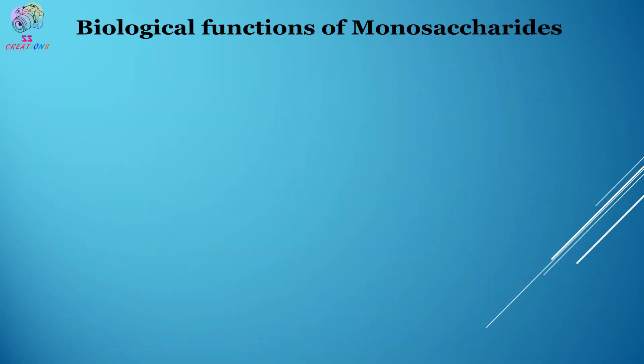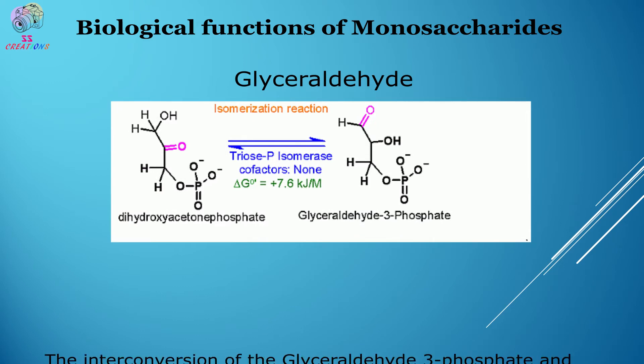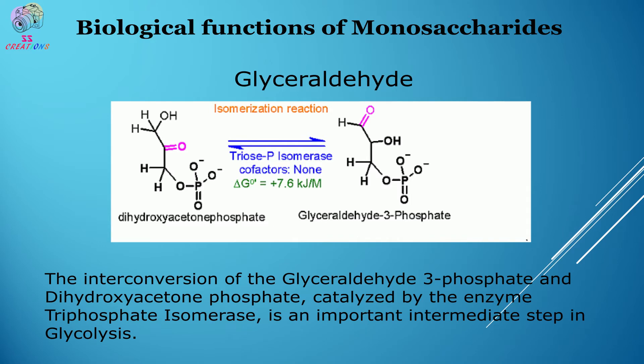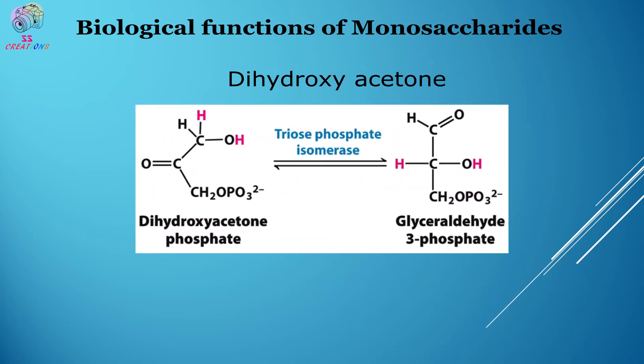Now we are going to discuss the biochemical functions of carbohydrates. For monosaccharides: glyceraldehyde-3-phosphate is an important intermediate in glycolysis. The interconversion of glyceraldehyde-3-phosphate and dihydroxyacetone phosphate, catalyzed by the enzyme triosephosphate isomerase, is an important intermediate step in glycolysis. The second monosaccharide is dihydroxyacetone — its 3-phosphate is also an intermediate in glycolysis.